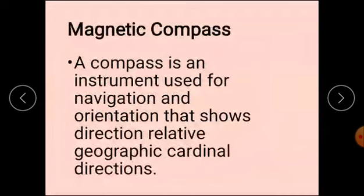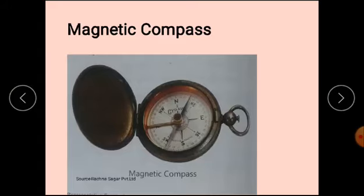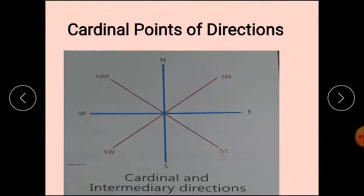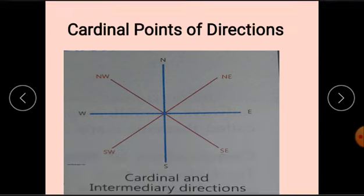Magnetic compass. A compass is an instrument used for navigation and orientation that shows direction relative to geographic cardinal directions. It is used to find out the directions of a place, as a magnetic needle always points in the north-south direction. Cardinal points are the four main points of the compass: North, South, East and West.